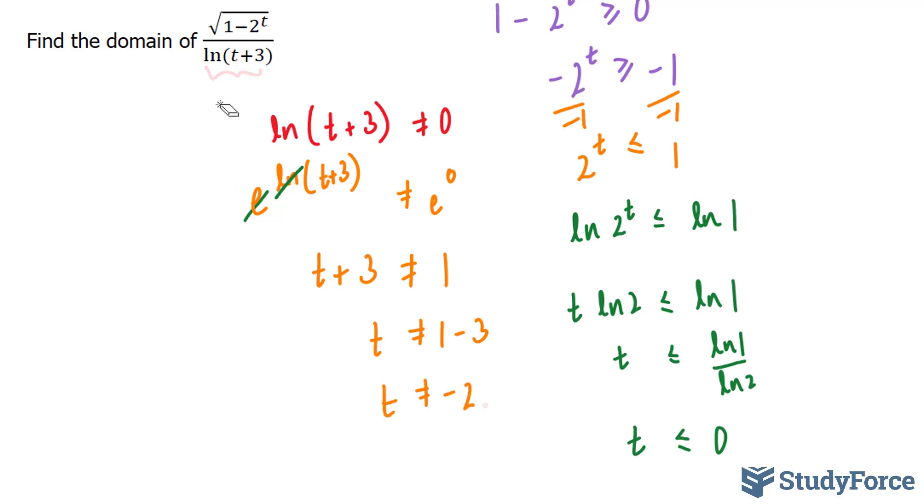And lastly, you'll notice that this t + 3, like in the previous example, needs to be greater than 0. Anything that is 0 and less will result in an error. So this part, t + 3, must be greater than 0. Solving for t, we end up with t must be greater than -3.